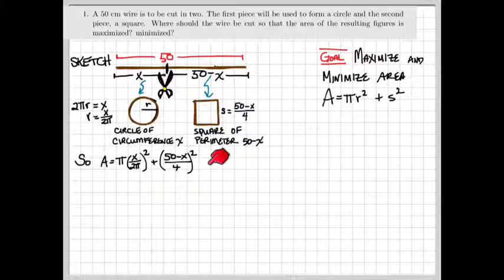it's important to know what interval makes sense to try and maximize or minimize this function on. In this particular case, x is the amount of wire given to the circle. That could range from x equaling 0, in which case all of the wire will be made into a square, all the way to x equaling 50, where all of the wire will be made into the circle, and none into the square.